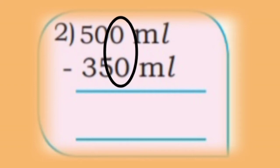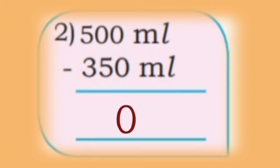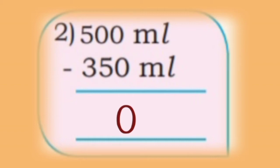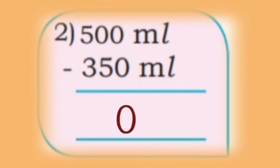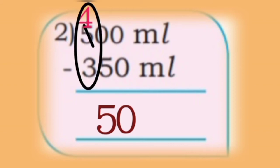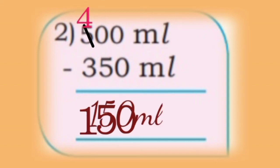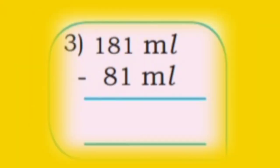Second one: 500 milliliter minus 350 milliliter. First we subtract unit place: 0 minus 0 is 0, write in unit place. Next subtract tenth place: 0 minus 5 — we cannot subtract 5 from 0, so we take one tenth from hundred place, it becomes 10. Now subtract 10 minus 5 is 5, write in tenth place. Now in hundred place 4 remains.